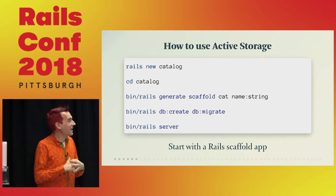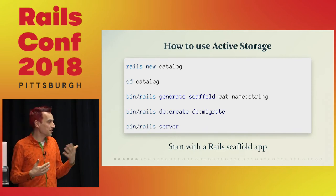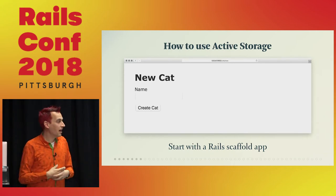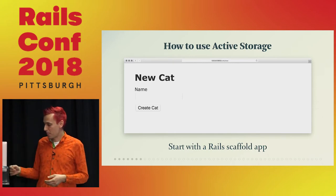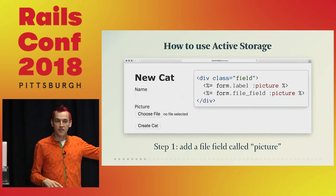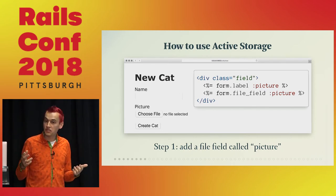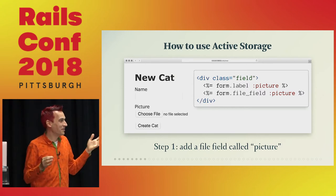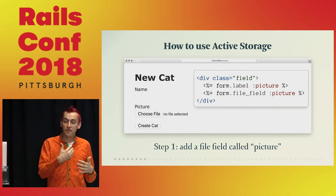You do rails new, I call this app 'catalog', and I generate a model called Cat — because it's really common and I haven't seen too many cats at this conference yet. Every cat has a name, then we create the database, migrate, and run the server. If you've ever used scaffold in Rails you know it generates forms like this one, so you have a form where you can add a new cat to your application. Now we want to add a field for people to upload an image.